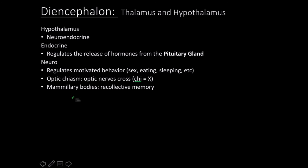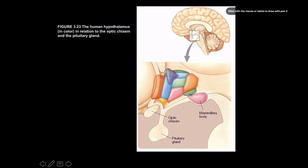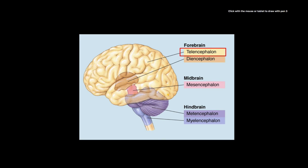It also contains the mammillary bodies, which play a role in recollective memory. Here's a picture showing the mammillary body, the optic chiasm, the pituitary gland, and parts of the hypothalamus. We'll talk more about this when we get to the endocrine lectures. For the rest of this video, we're going to talk about the telencephalon.